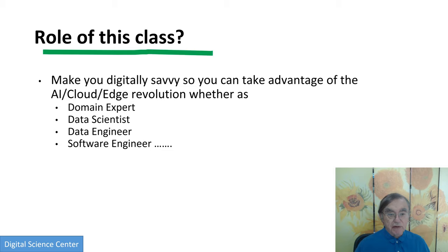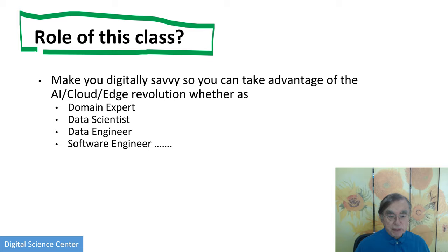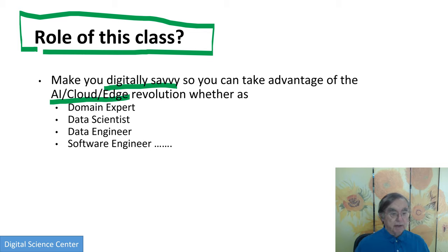I already told you the role of this class. At the very least, whatever you do, you should be digitally savvy. You don't have to build deep learning networks to succeed. You don't have to write 100,000 cloud-native lines of Java or what have you, but you need to be digitally savvy. As we go into this AI cloud edge revolution, you will know how to take advantage of it. And you can get other people to write your software and run the machine learning.